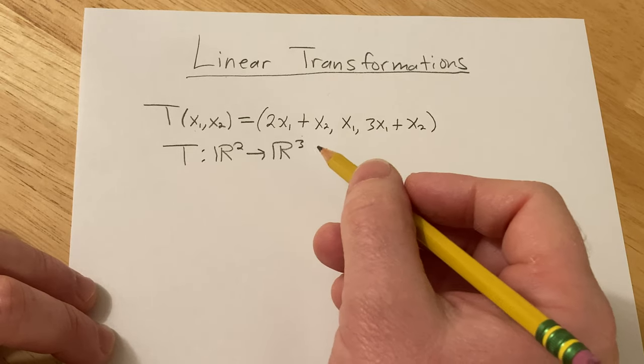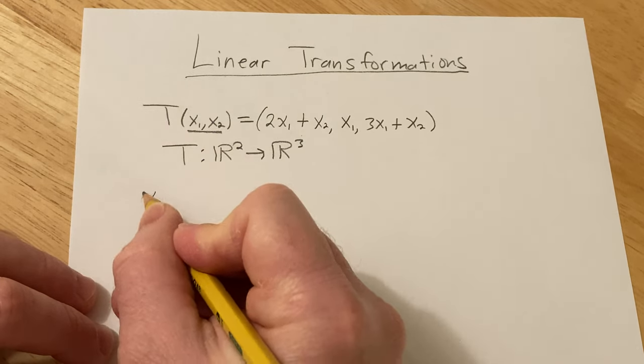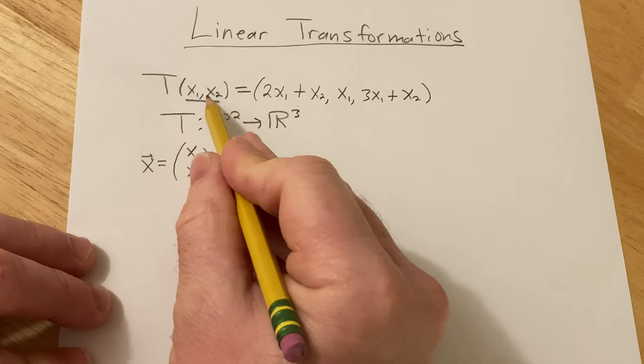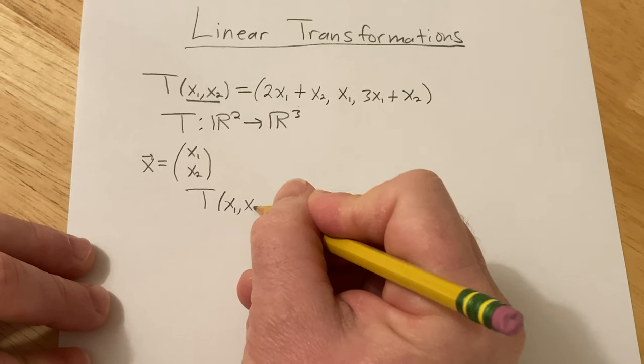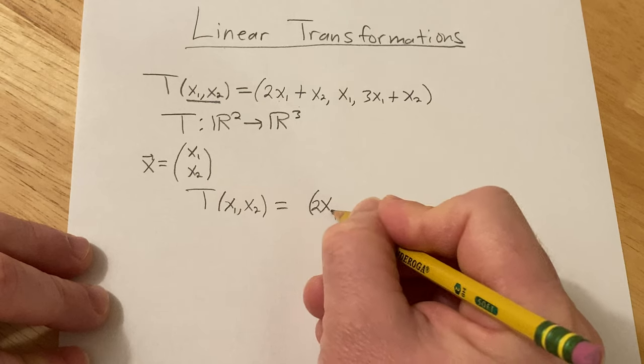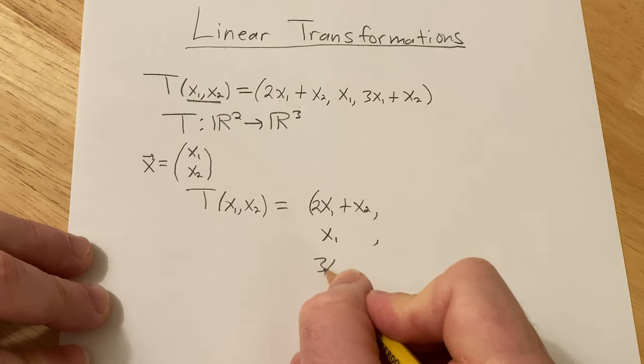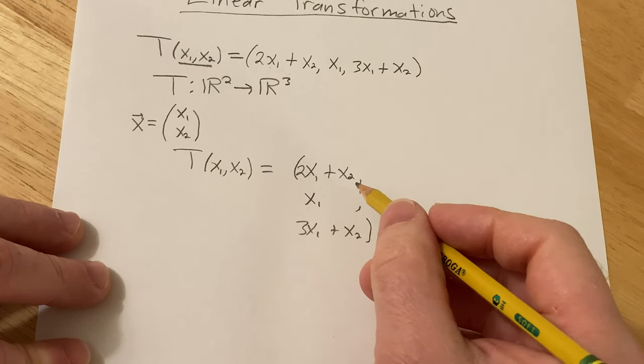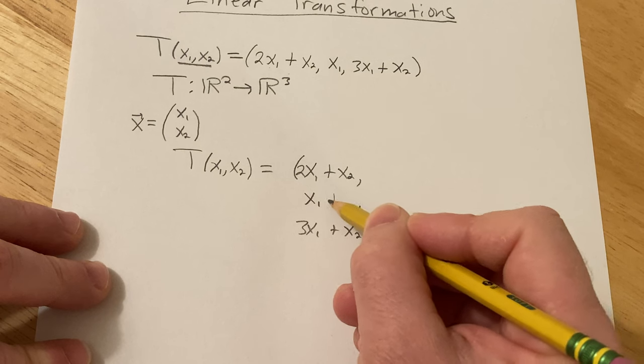So the idea is to think about it a certain way. You can think of this as a column vector. And then now I'm going to take T and write it a different way just to show you. So I'm going to just keep this the same, but I'm going to write it like this. Watch this. So this is really 2x1 plus x2, x1, and then 3x1 plus x2. So you see it kind of looks like a matrix, right? And in fact, it is. This is a matrix. So if you think about it very carefully, you could pretty much insert a 0 here.